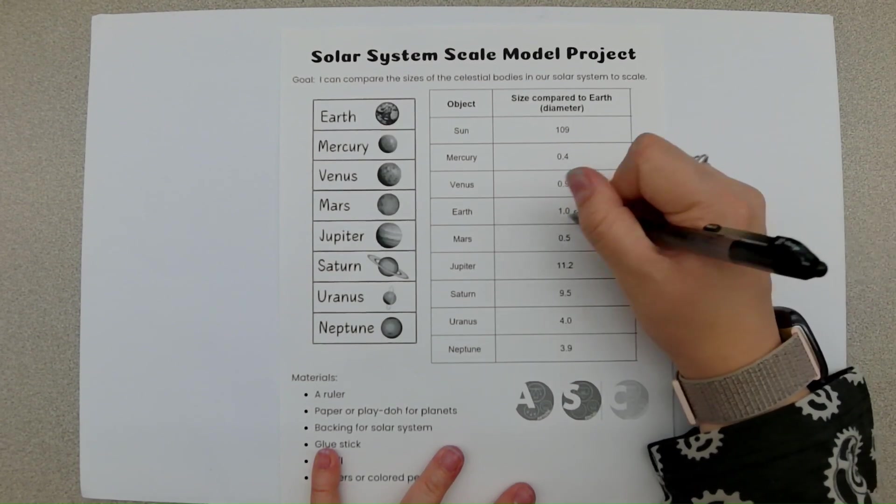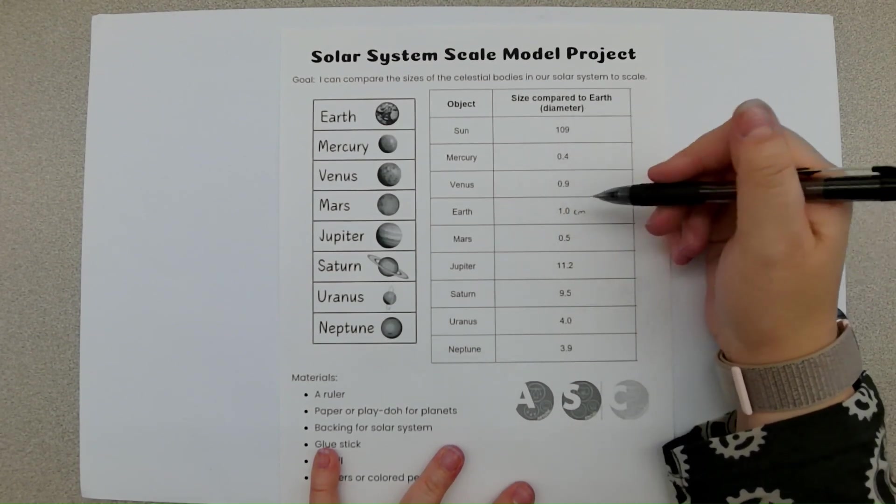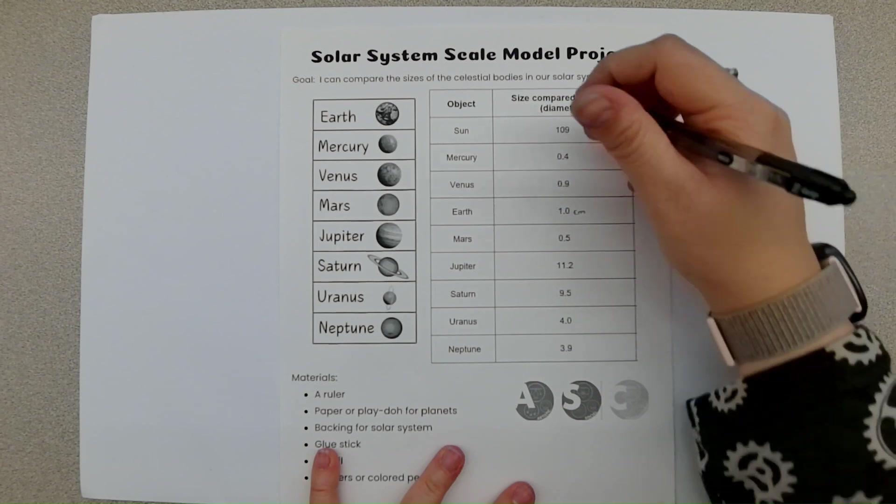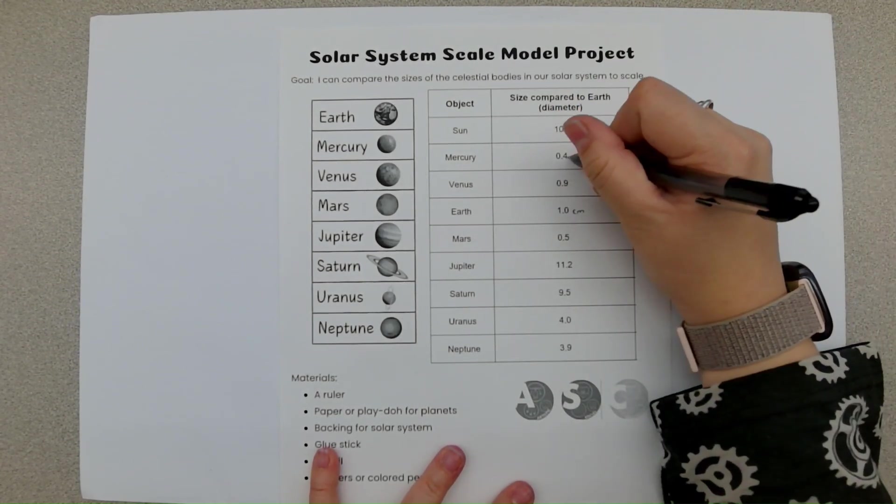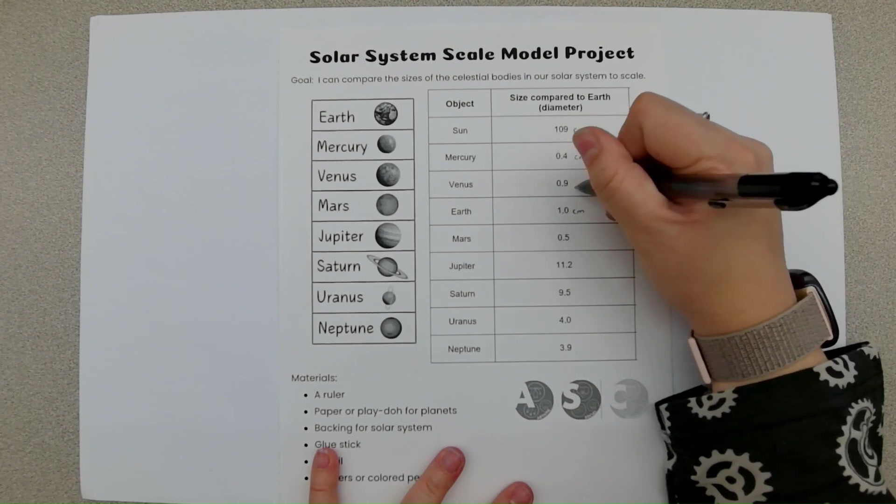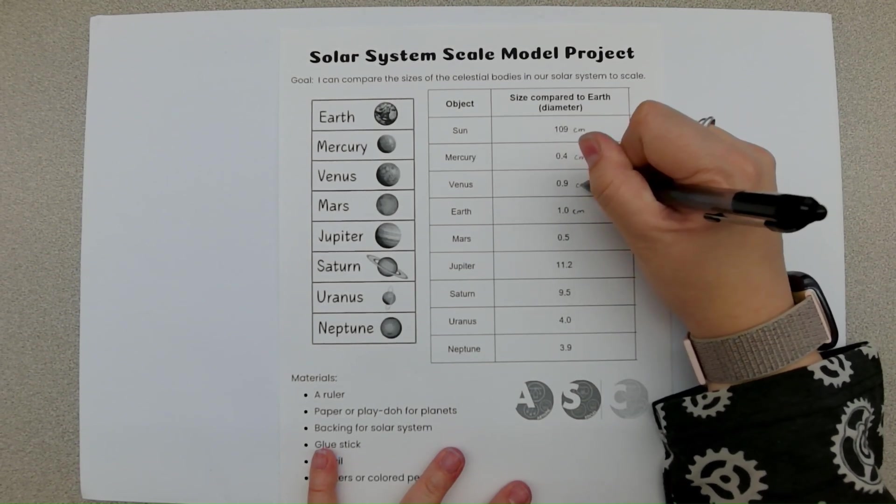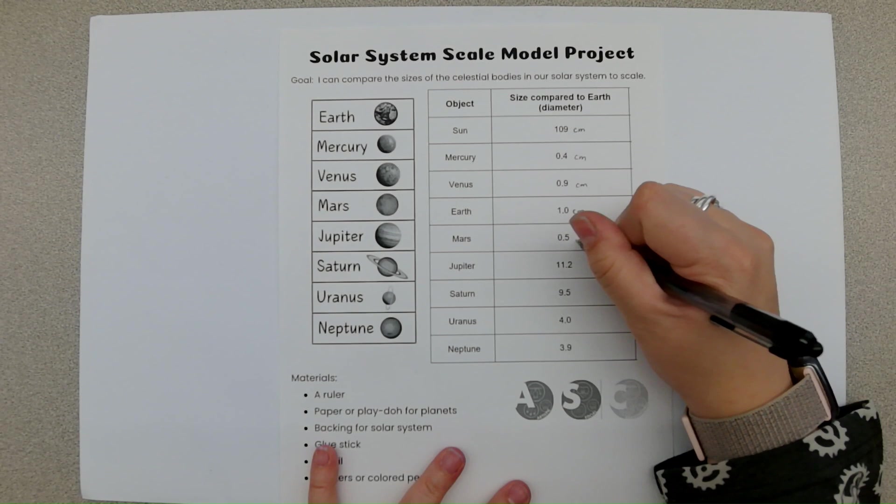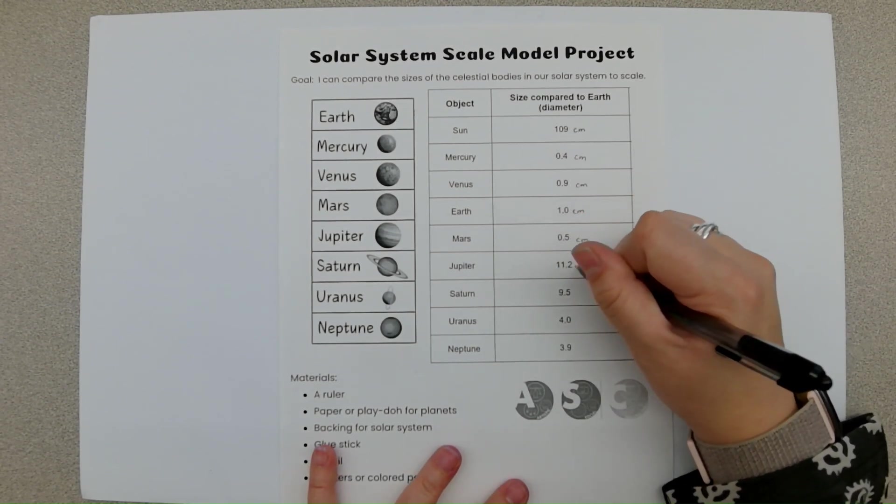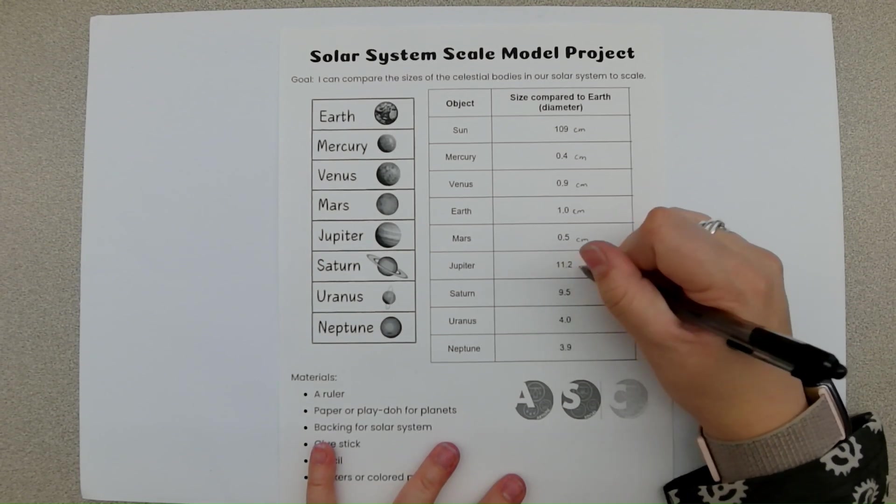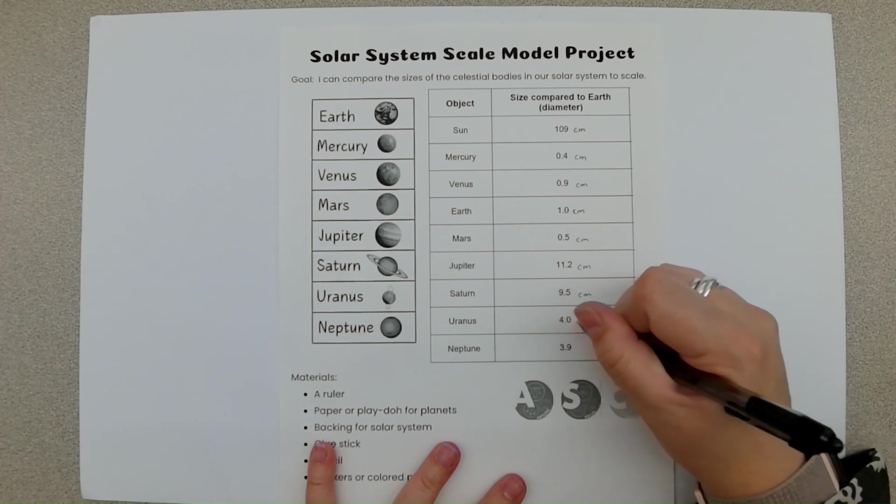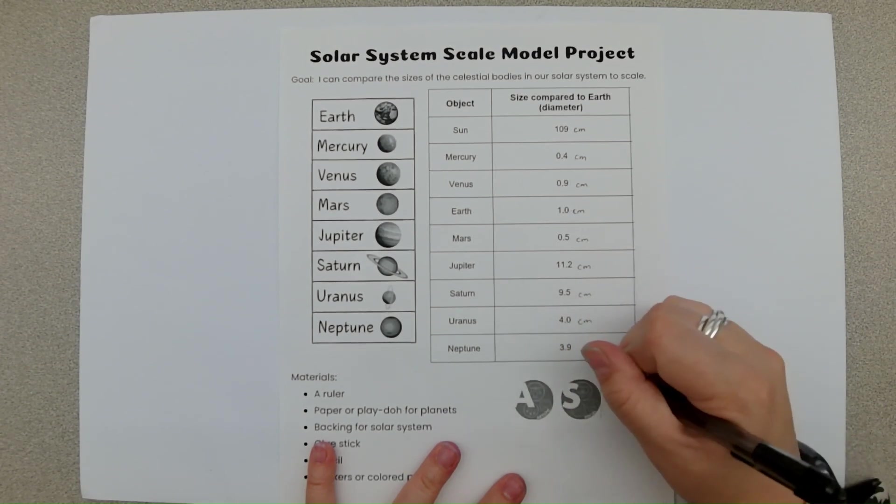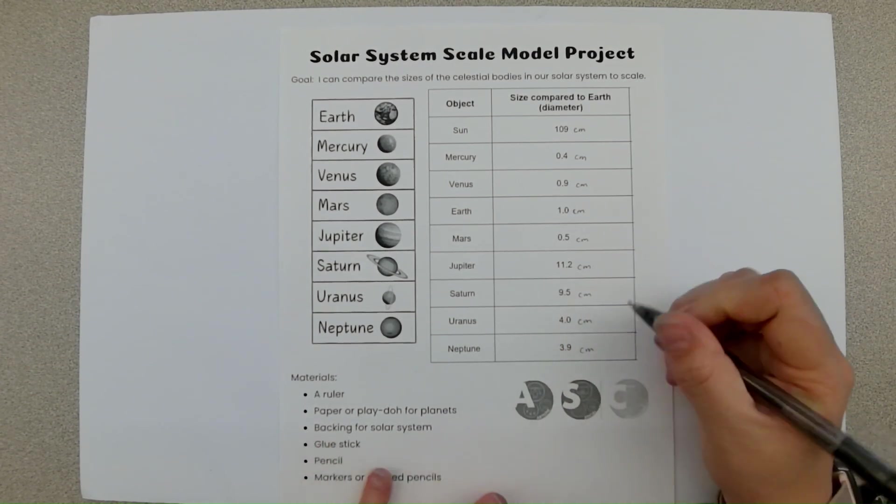So if my Earth is going to be one centimeter, everything is based off of that. So our sun is going to be 109 centimeters. That's going to be really, really large. Mercury is going to be 0.4 centimeters. Venus is 0.9 centimeters. Our Mars is going to be 0.5 centimeters. Jupiter is going to be our largest planet, which that makes sense. 11.2 centimeters. Saturn is 9.5 centimeters. Uranus is 4 centimeters. Then you have Neptune at 3.9 centimeters.